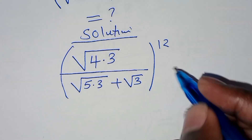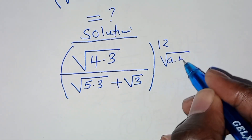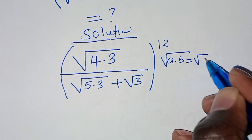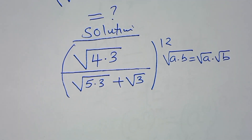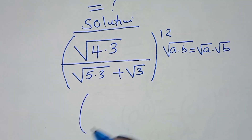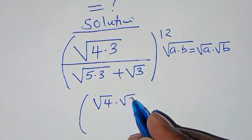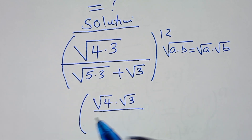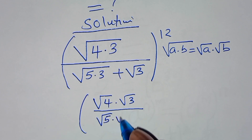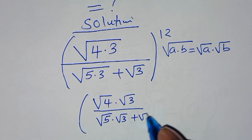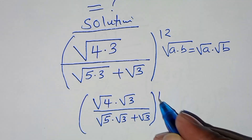We find that square root of 4 times 3 is in the form of square root of a times b, which we can express as square root of a times square root of b. So we'll have square root of 4 times square root of 3 divided by square root of 5 times square root of 3 plus square root of 3, everything raised to power 12.